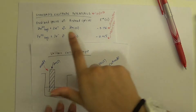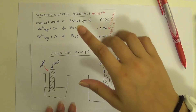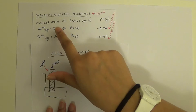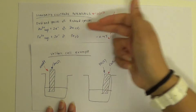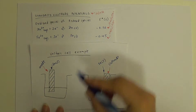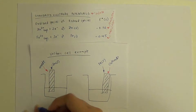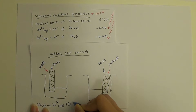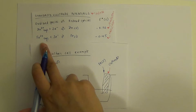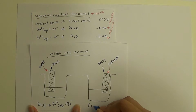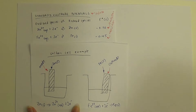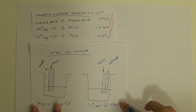Because zinc is oxidizing — losing electrons — we go from zinc solid to Zn²⁺ ions and two electrons. That's the anode half-reaction. At the cathode, we have Fe²⁺ ions in aqueous solution gaining two electrons and forming iron solid. These are the reactions happening in each half-cell.